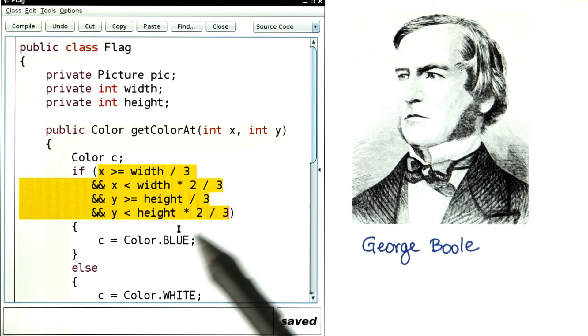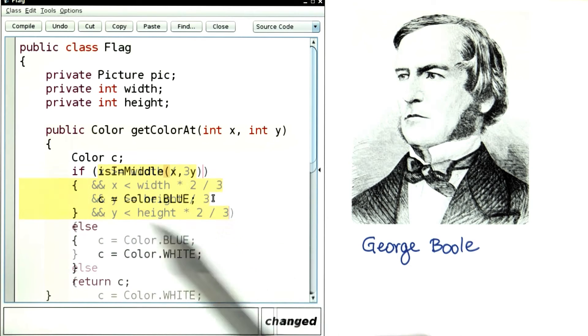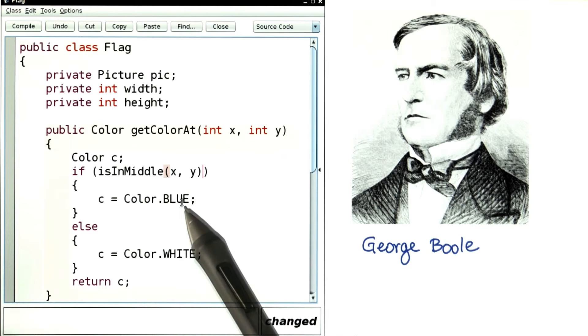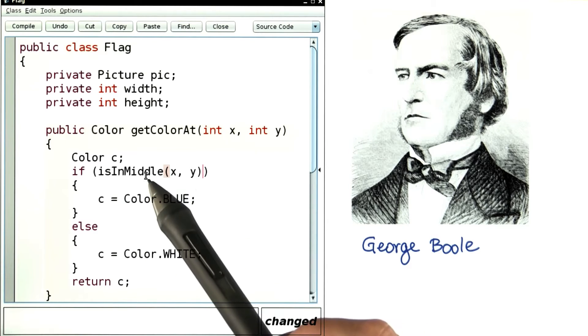Let's think about what this test here was. This was the test for the S flag, where you had a blue square in the middle. This test checked, is our pixel in the middle? So if we had a method that could test that, we could say, if x and y is in the middle, then we want blue, otherwise white. Much easier to read. Let's go and write this method.